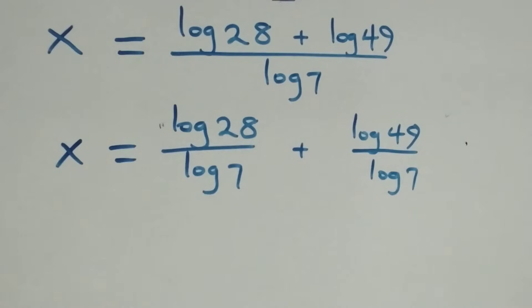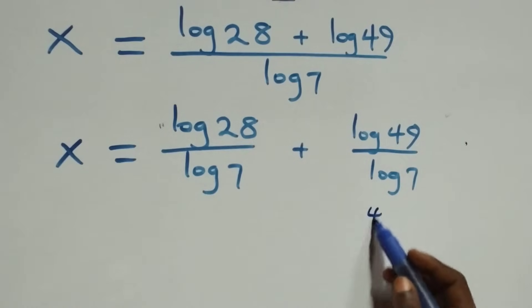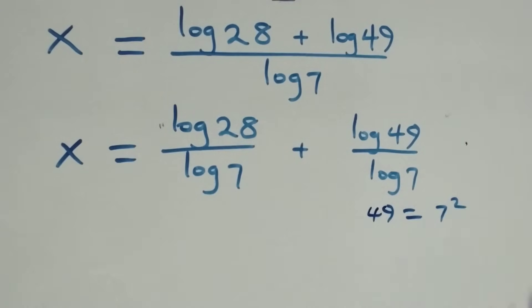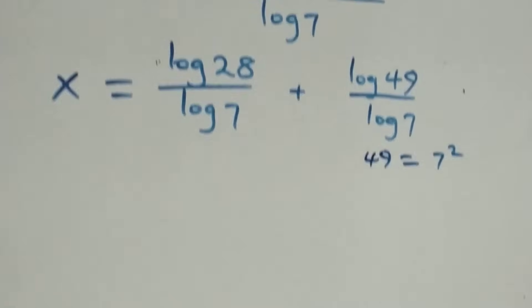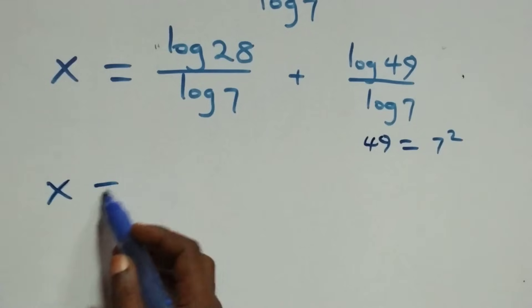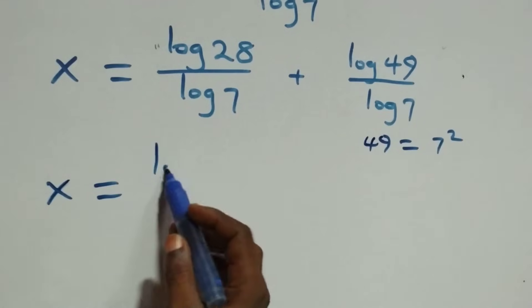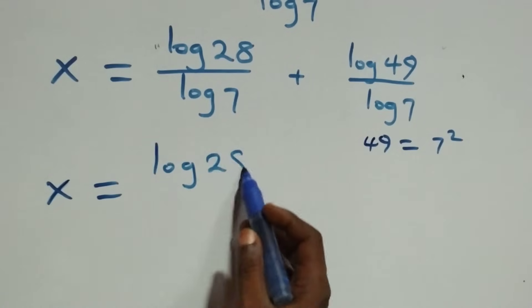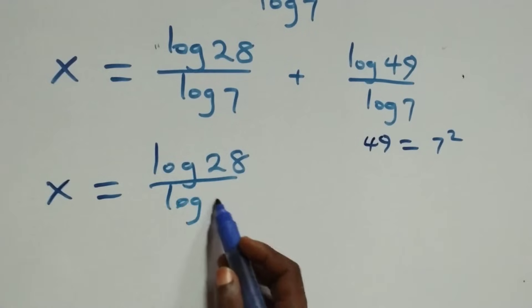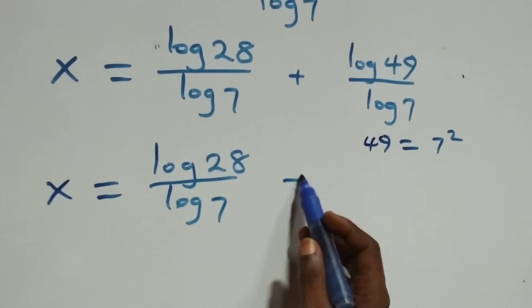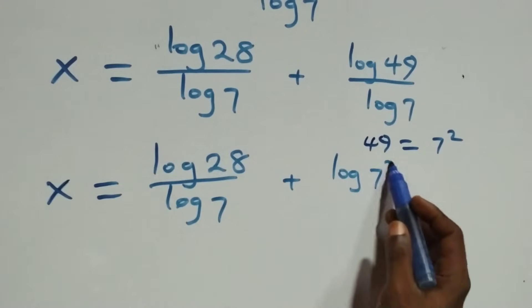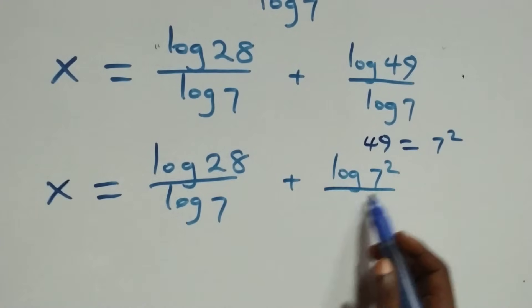Now, 49 is the same thing as 7 times 7, which is 7 squared. So what we have becomes x equals log 28 over log 7 plus log of 7 squared over log 7.